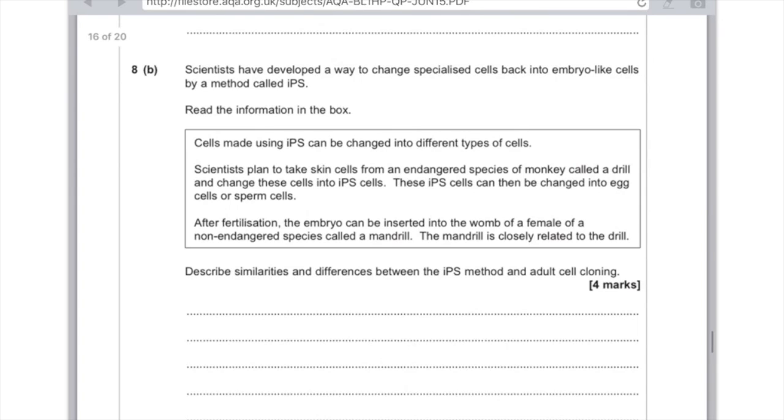Cells made using IPS can be changed into different types of cells. Scientists plan to take skin cells from an endangered species of monkey called a drill and change these cells into IPS cells. These IPS cells can then be changed into egg cells or sperm cells. After fertilization, the embryo can be inserted into the womb of a female of a non-endangered species called a mandrel. The mandrel is closely related to the drill.